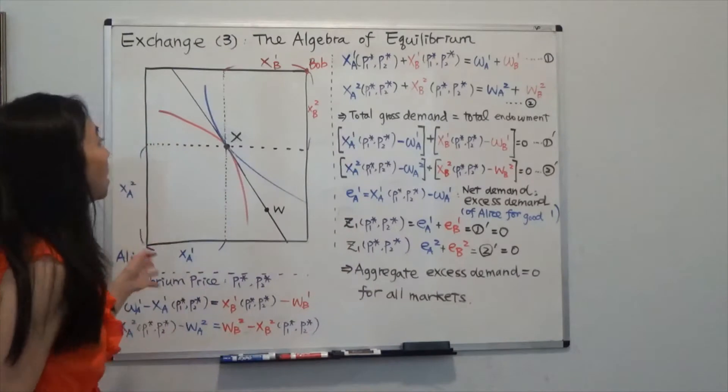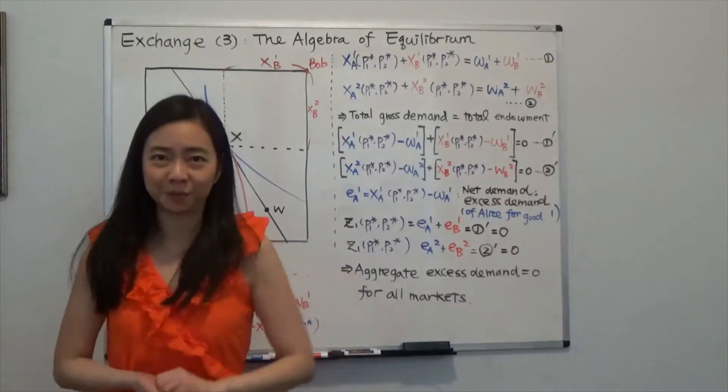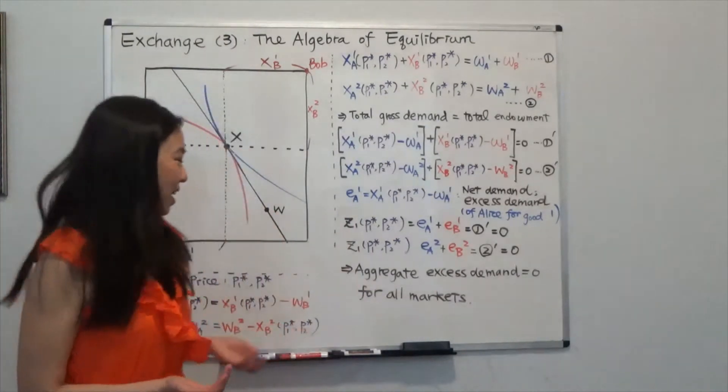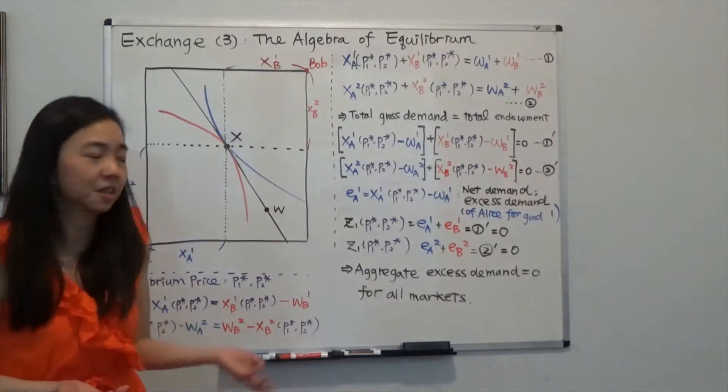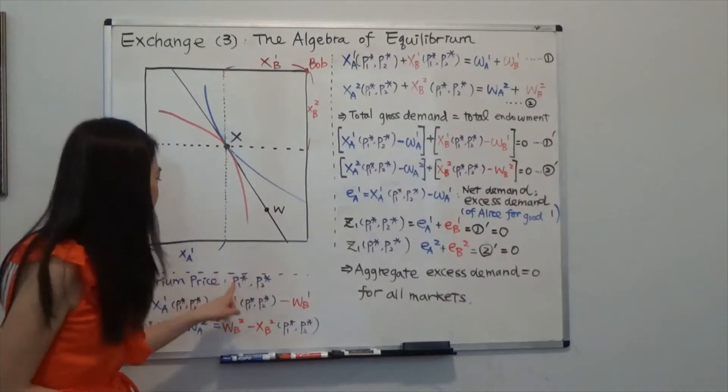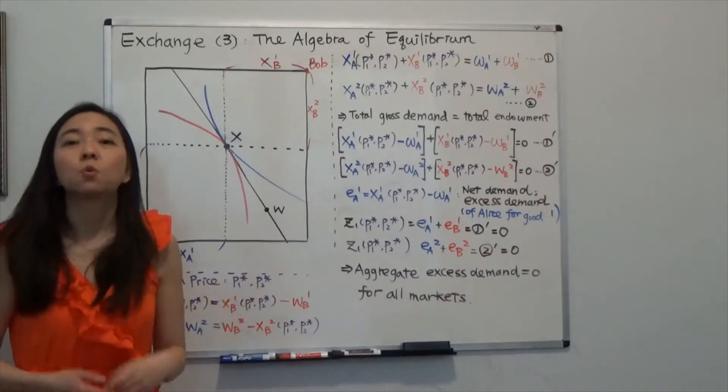In particular, I want to talk about the algebra of equilibrium. So suppose we have an equilibrium price or a vector of price, P1 star, P2 star, where the market clears.